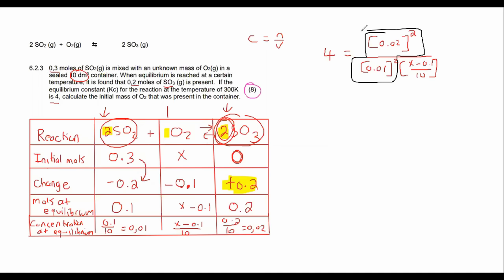So we can say that KC is always equal to the product, so that would be [SO3] to the power of its coefficient which is 2, over [0.01]^2 × (x - 0.1)/10 like that. Now we know what the KC value is. Sorry, I don't know why I didn't fill in the SO3 here, 0.02. And we know that KC is equal to 4.